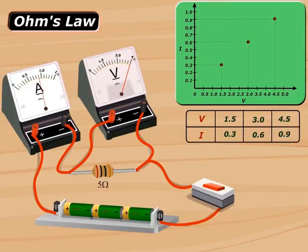So, we can see that the current flowing through the resistor is directly proportional to the potential difference across its endpoints.